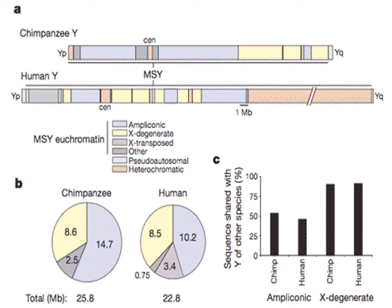Because genes occur in families or similar categories, the researchers also sought to determine if there was any difference in actual gene categories. They found a shocking 33% difference. The human Y chromosome contains a third more gene categories — entirely different classes of genes compared to chimps.